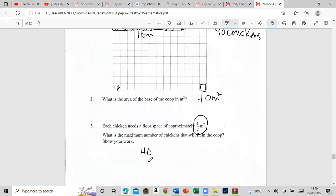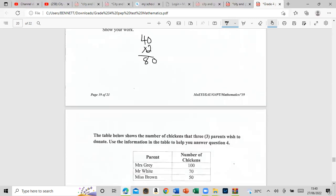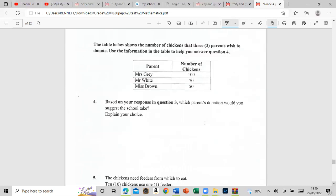You guys must read the question very carefully. Ensure that you understand what they're asking. The table below shows the number of chickens that three parents wish to donate. Mrs. Gray can give 100 chickens, Mr. White said he can give 70, and Miss Brown 50.